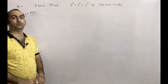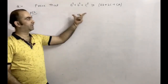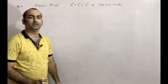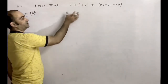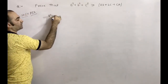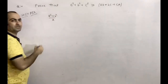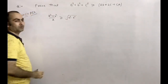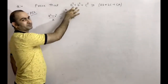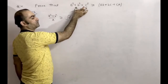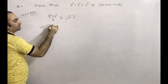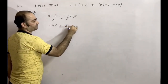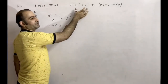In Method 2 we use AM-GM on pairs of terms separately. Applying AM-GM to the first two terms: (a² + b²) / 2 ≥ √(a² · b²). Simplifying: a² + b² ≥ 2ab.